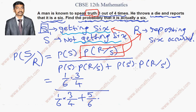Again, what is the meaning of R by S dash? S dash is not getting 6. We didn't get 6, but he is reporting that 6 occurred. It means what? It is false. When the truth is 3 out of 4 times, the false is 1 by 4. So I will put 1 by 4 here.